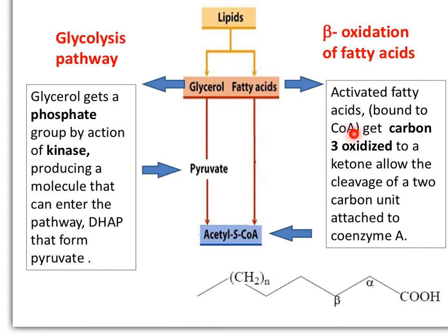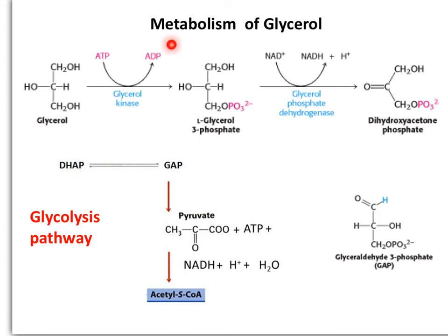The three fatty acids must be activated by reacting with a coenzyme A, forming a thioester bond. Upon this activation, beta-oxidation will occur: the carbon at the beta position from the carbonyl will become a ketone group, producing small two-carbon unit molecules of acetyl-coenzyme A. Therefore, glycerol units and fatty acids both produce acetyl-coenzyme A that can enter the citric acid cycle.